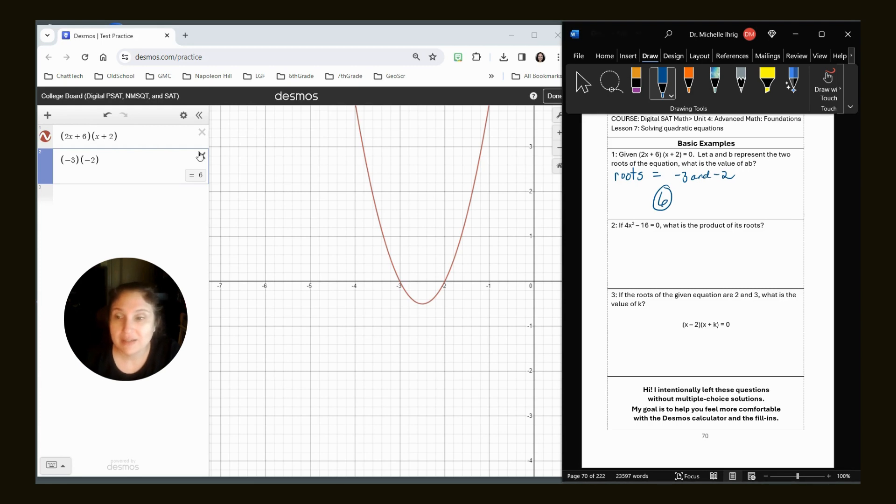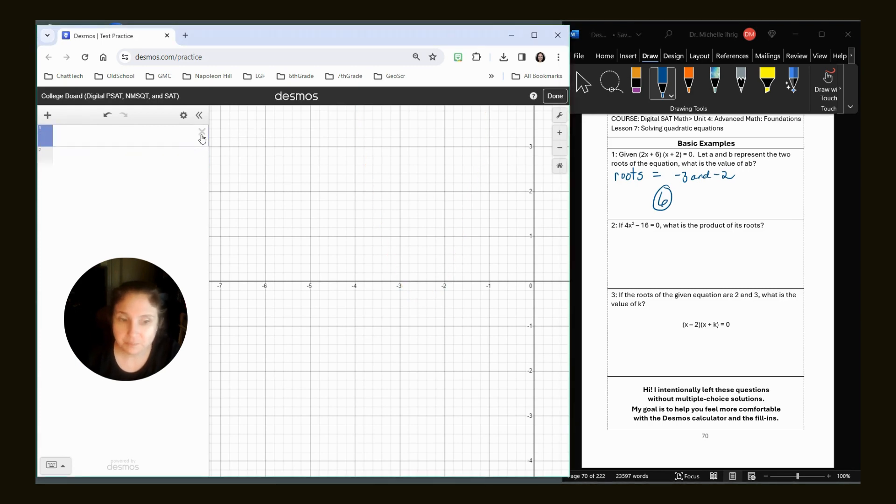If we have the function 4X squared minus 16 equals zero, what is the product of the roots? I'm going to take out that language.